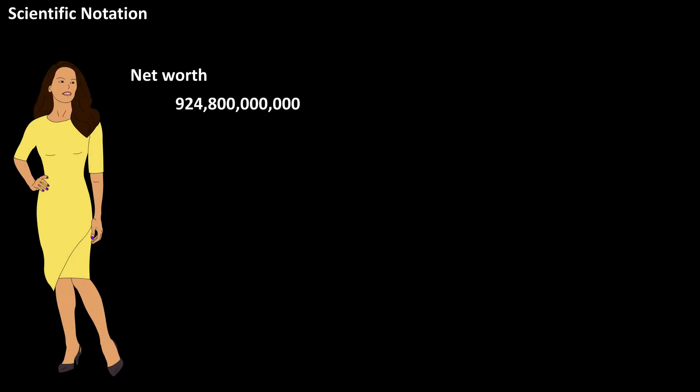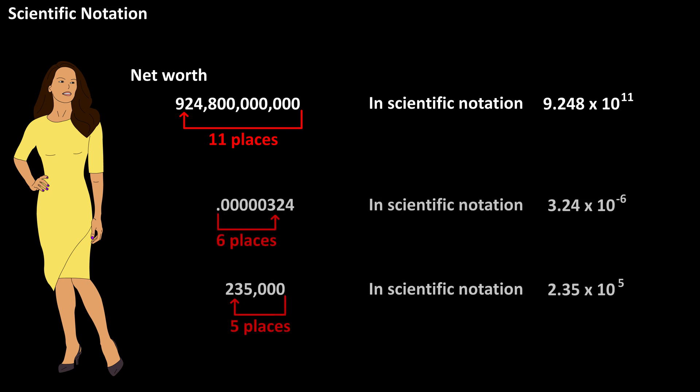One more example: let's say that a very wealthy lady is the CEO of a big corporation, and her net worth is estimated at this number. To write this number in scientific notation, we count how many places we need to move the decimal to get a single non-zero digit in the ones column, which will be right here behind the 9, and there are 11 places. So we will have 9.248 times 10 to the 11 as the scientific notation for that number. And here are a couple more examples written out on the screen for you.